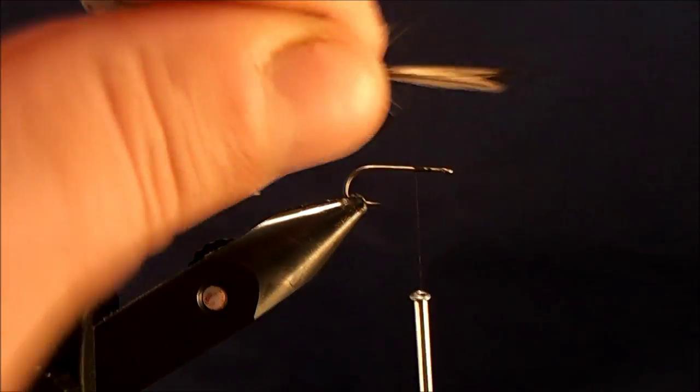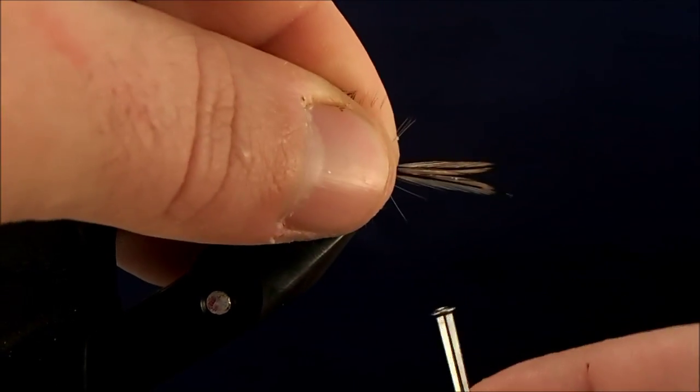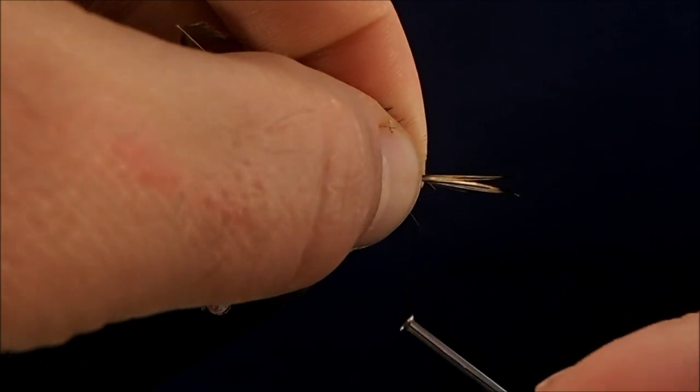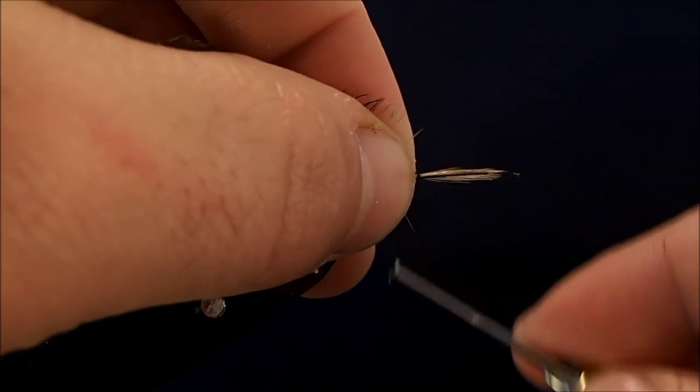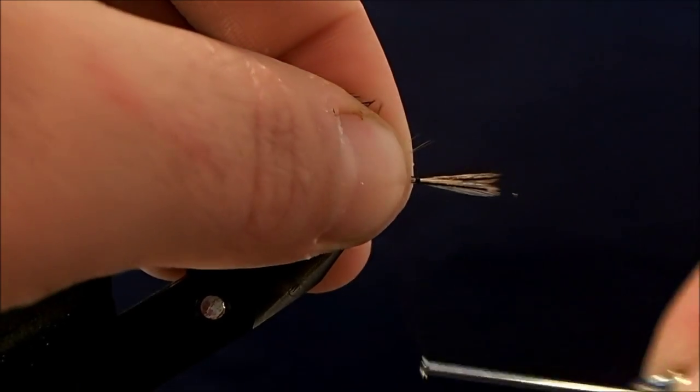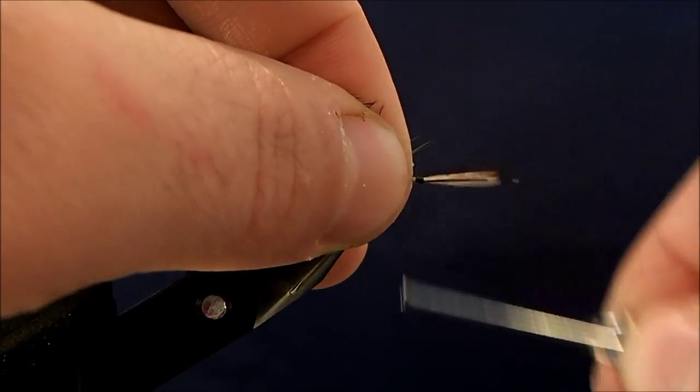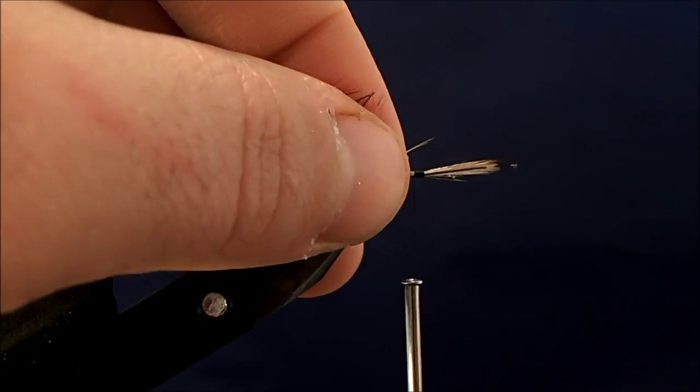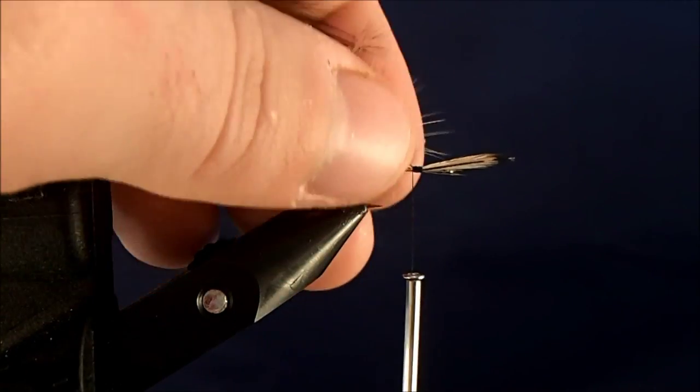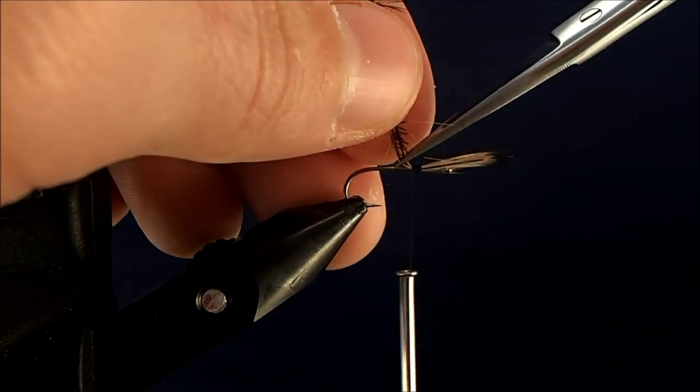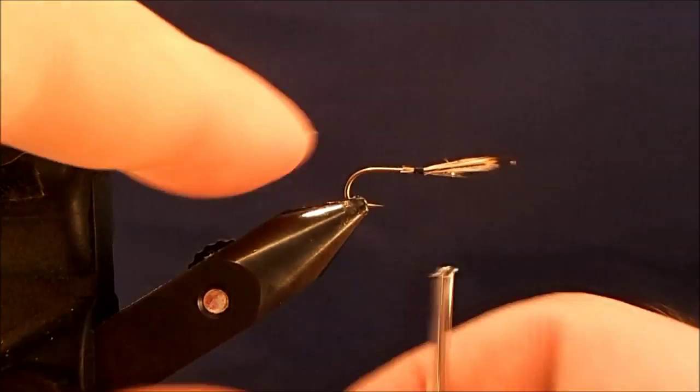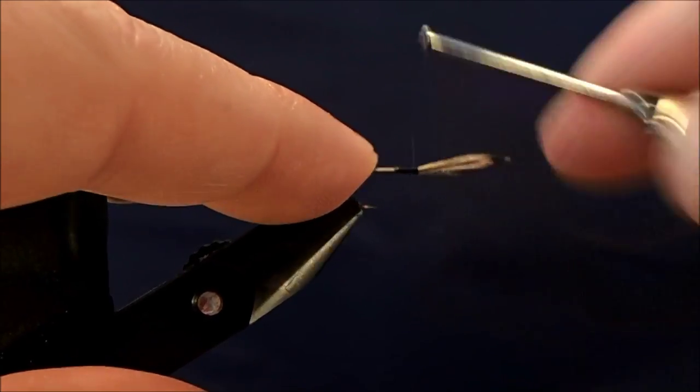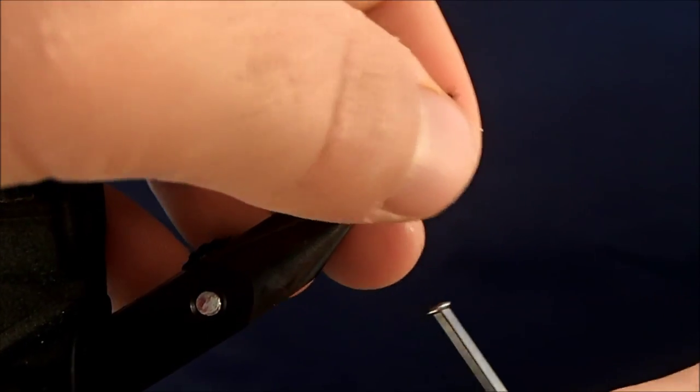And then I'll use that natural V just to place one on either side of the hook and start to make a couple of securing wraps. And once I'm happy with the way that they're secured facing forward I can come back and clip off the rest of the stems, finish taking my wraps back through to make sure they're not going anywhere and now I can stand them up.